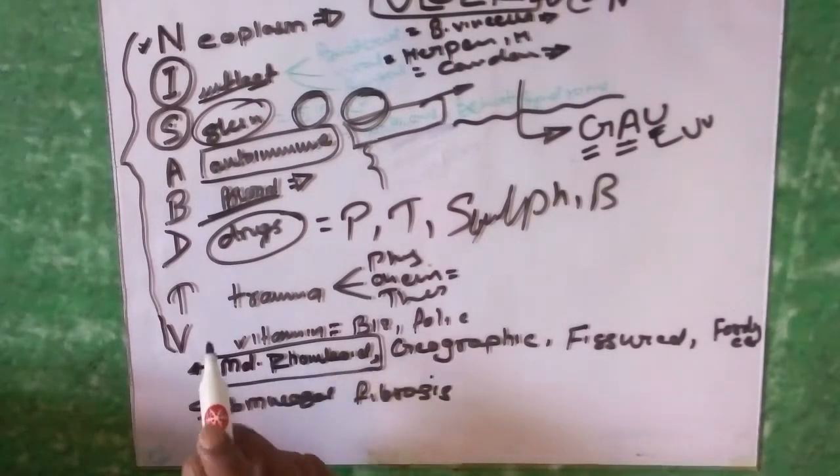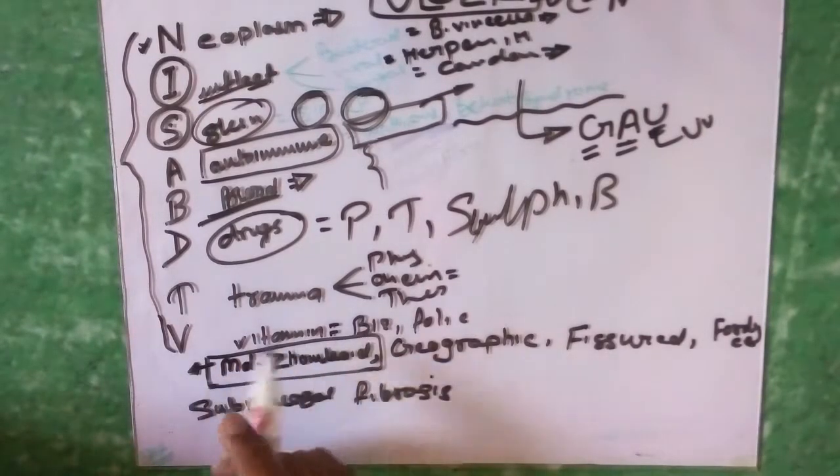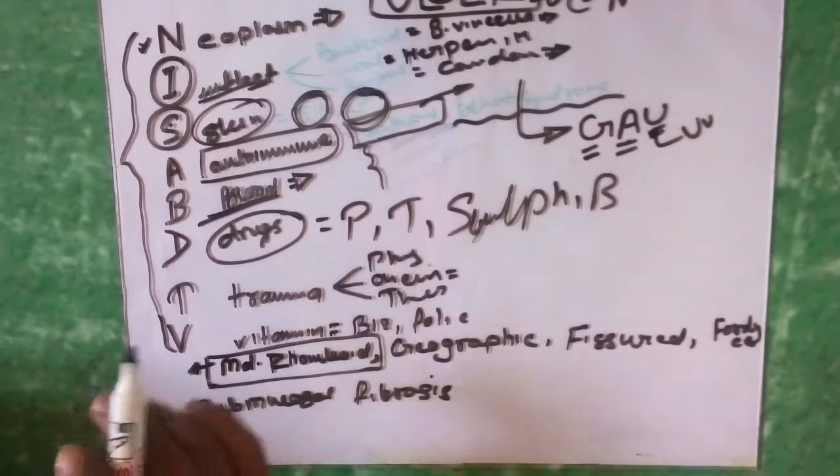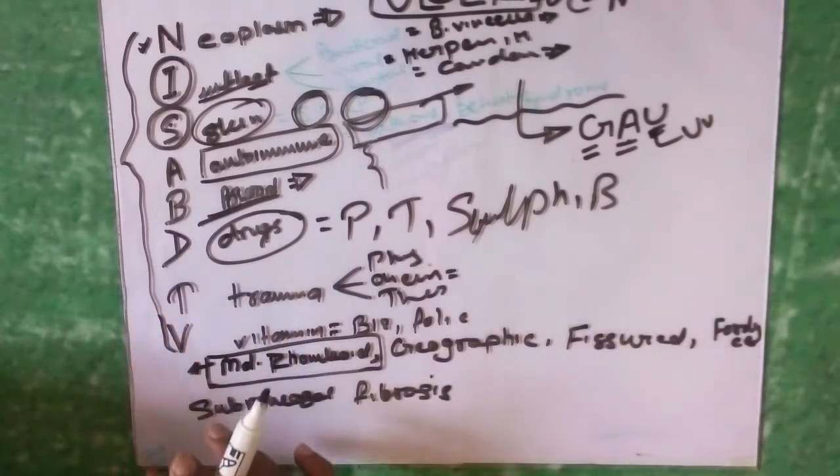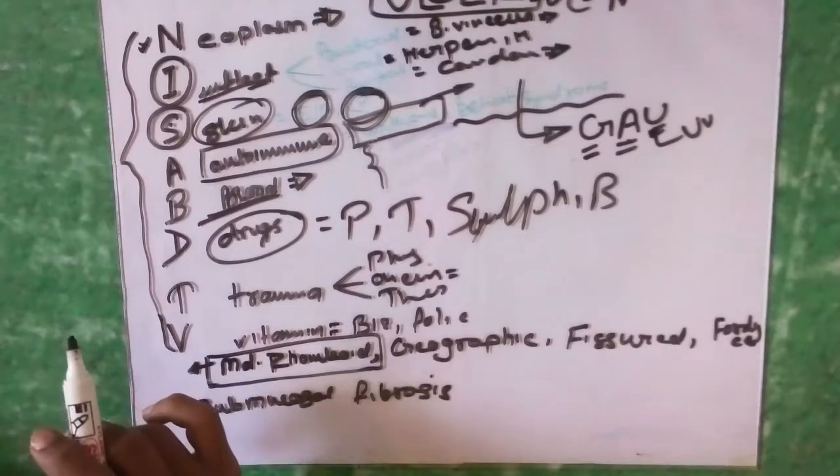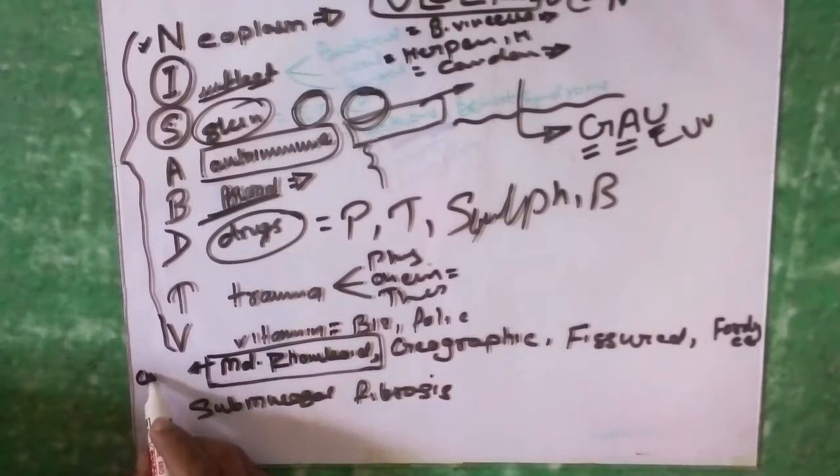If tuberculum impar persists, then it causes median rhomboid tongue in which on the dorsum of the tongue there is a median rhomboid area with absence of papillae.